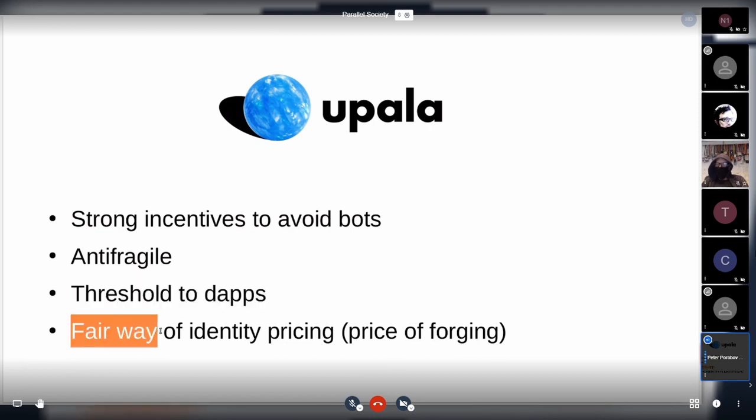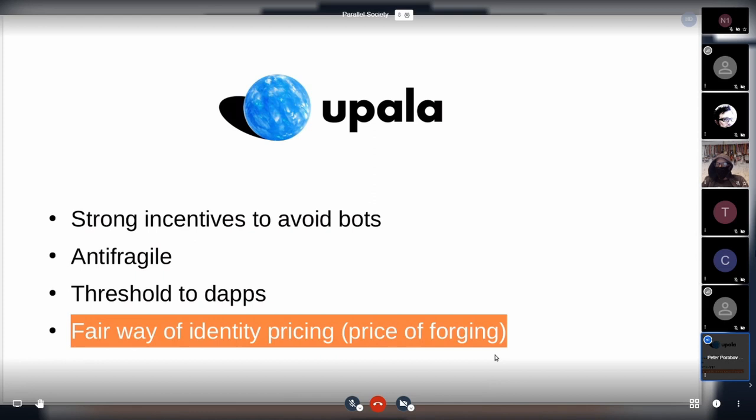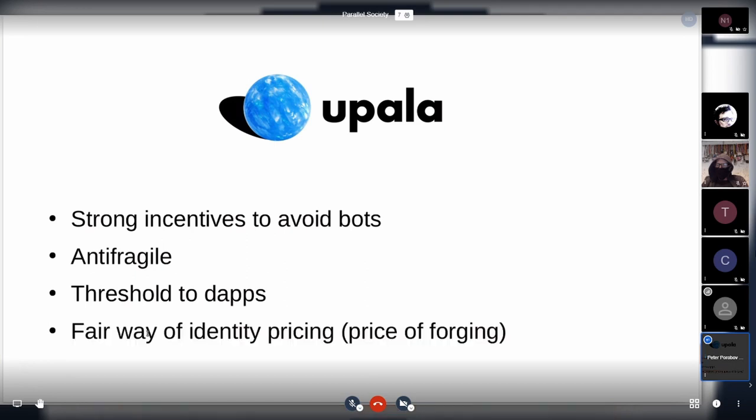Another way to think of Upala is that it's the first thing that provides pricing for other identities. I'd claim that every identity out there has a score. Even a state ID can be forged. BrightID and IDENA identities can be forged by, for example, hiring actors to act like humans or exploit social engineering. Basically every identity has a price to it.